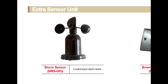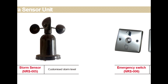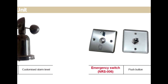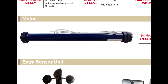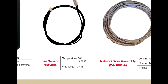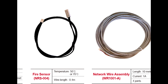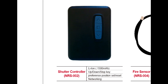Storm sensor and emergency switch. This is a 20Nm motor that can raise up to a 32 kg slat. Fire sensor protects your home from fire. The shutter controller has a built-in lithium-ion battery so that it can operate normally even during power failure.